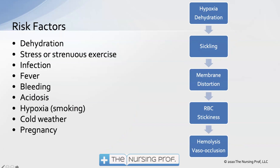Risk factors for developing a sickle cell crisis include dehydration, stress, exercise, infection, and fever — which sounds like every patient in the hospital. So if your patient has a history of sickle cell disease, we want to watch for and try to avoid these risk factors, specifically avoiding hypoxia and dehydration.